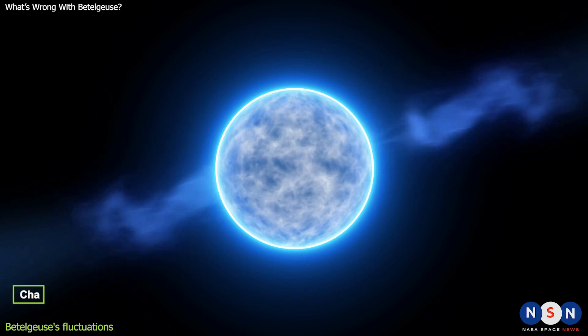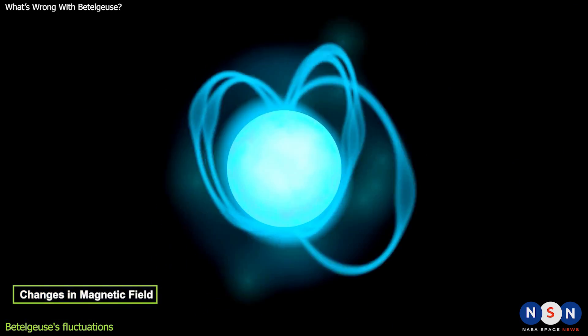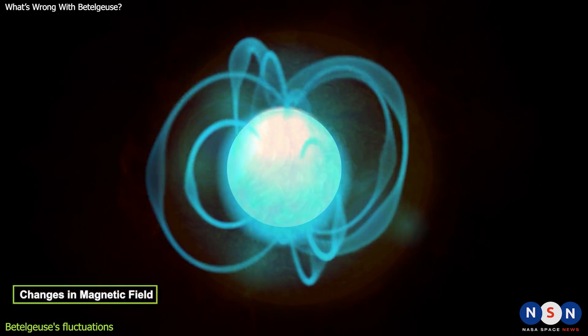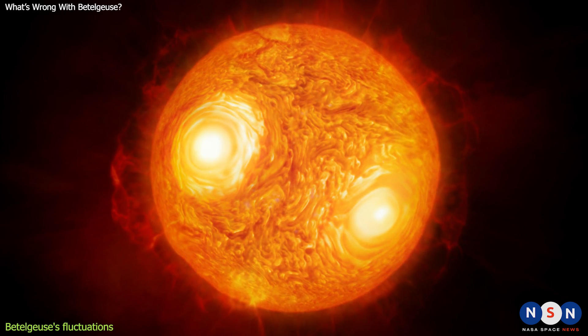It could also be that Betelgeuse is experiencing changes in its magnetic field. Magnetic fields can affect how stars emit light and heat. They can also create spots on the star's surface that are cooler or hotter than the surrounding areas.